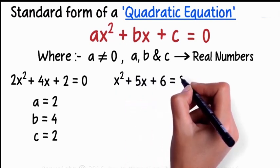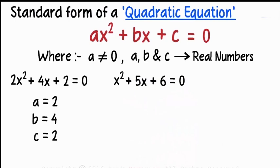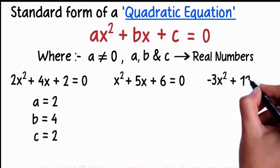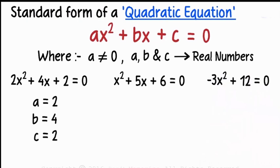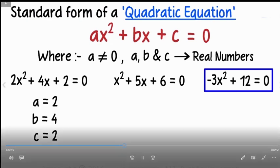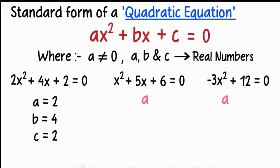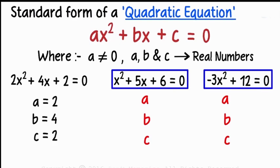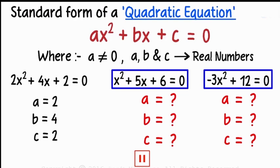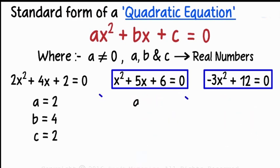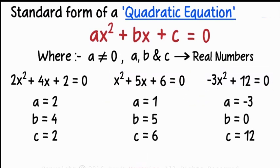Second example: x² + 5x + 6 = 0. Third example: -3x² + 12 = 0. In the second example, a is equal to 1, b is equal to 5, and c is equal to 6. In the third example, a is equal to -3, b is equal to 0, and c is equal to 12.